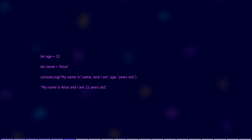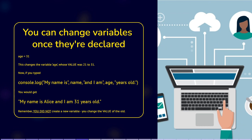You can also change variables once they're declared. If you write age equals 31, this changes the variable age, whose value was 21, to the new value of 31. Now if you typed console.log, you would get: my name is Alice and I am 31 years old. Remember, you did not create a new variable — you changed the value of the old one.